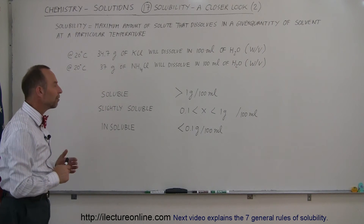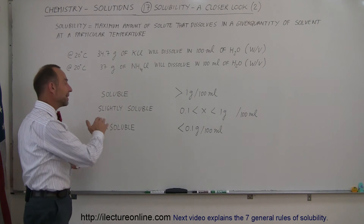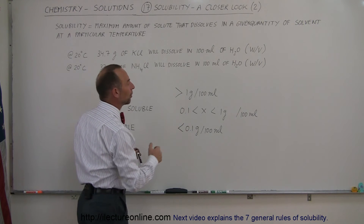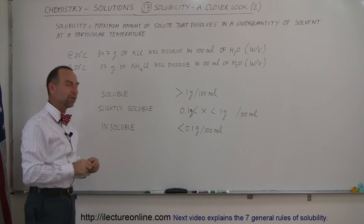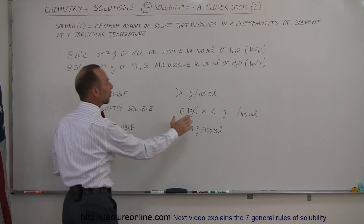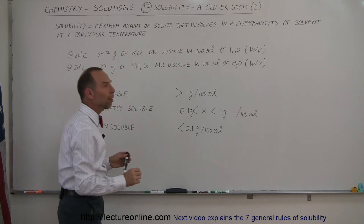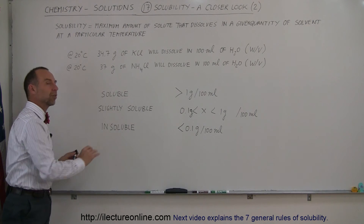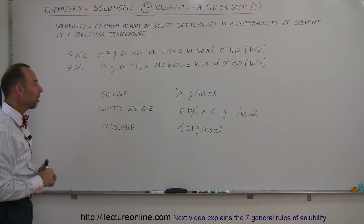Then there's a limit: if it's less than one gram per 100 milliliters, but yet still more than 0.1 grams per 100 milliliters, so if the amount that gets dissolved in 100 milliliters of water falls between 0.1 and 1 gram, we can still say that it's soluble, but not completely. We call that slightly soluble — just a small amount gets dissolved.